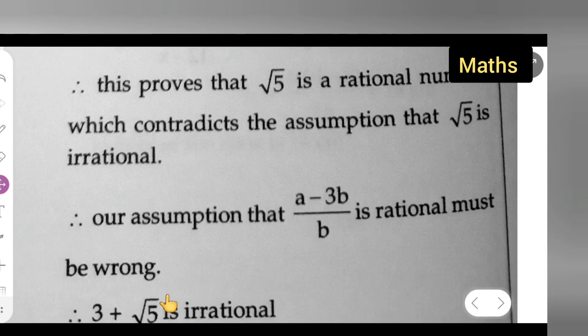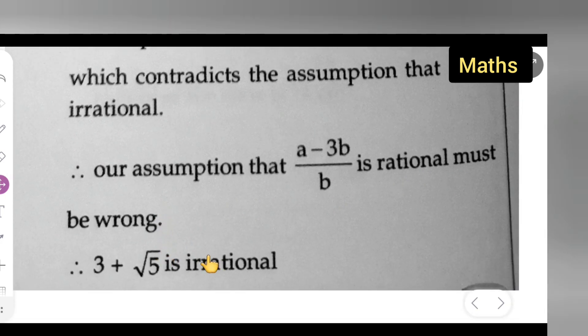So you can see that 3 plus root 5 is irrational because we have made assumptions saying that this is rational, so that assumption is wrong. So finally, I can say that it is irrational. I hope you have understood this proof.